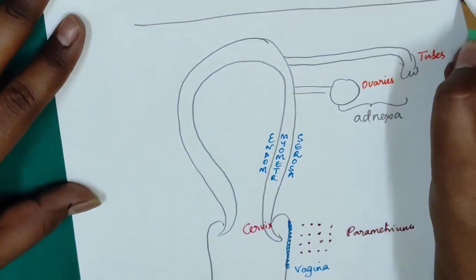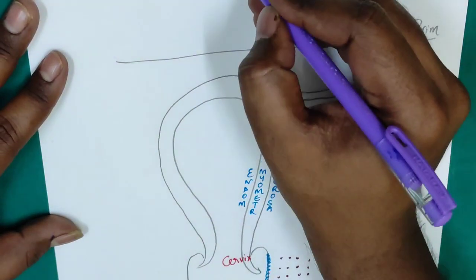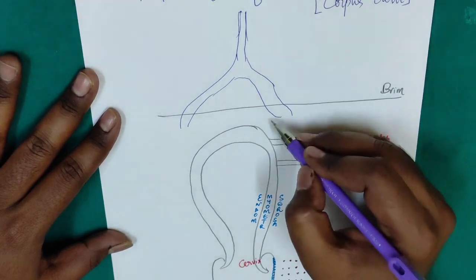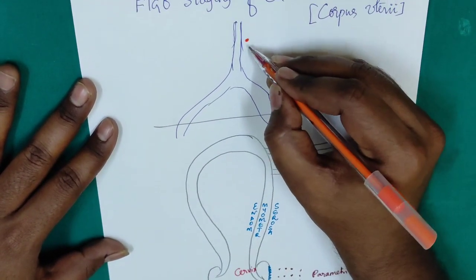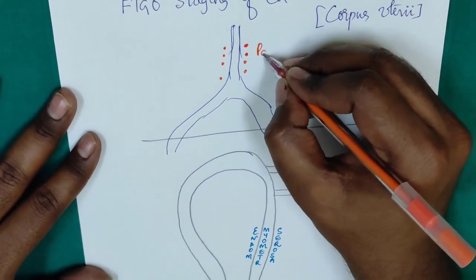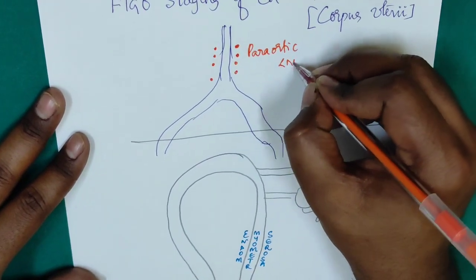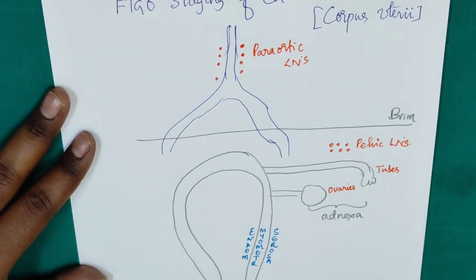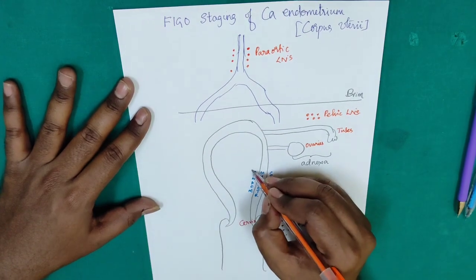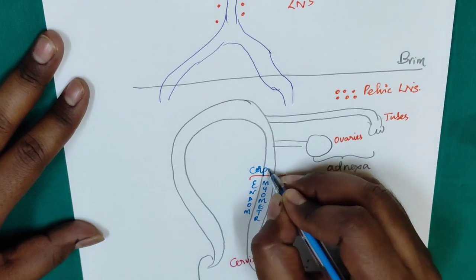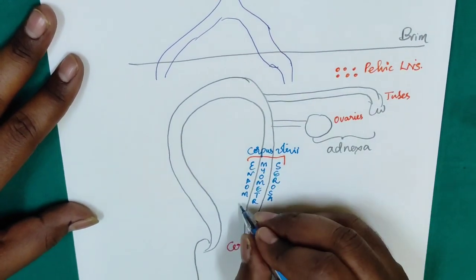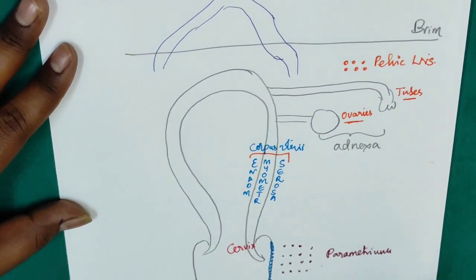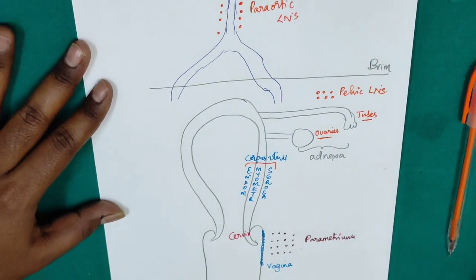This is the brim. Next, this is the abdominal aorta, which is dividing. These are all para-aortic lymph nodes, and these are all pelvic lymph nodes. So, corpus uteri is nothing but endometrium, myometrium, and serosa. Adnexa is nothing but tubes and ovaries. And this is cervix, vagina, parametrium, para-aortic lymph nodes, and pelvic lymph nodes.